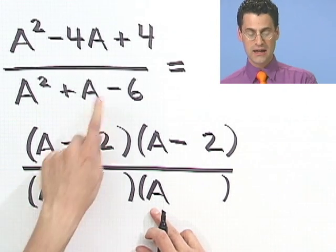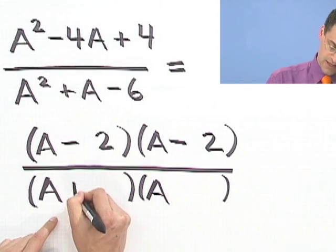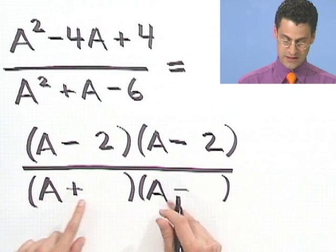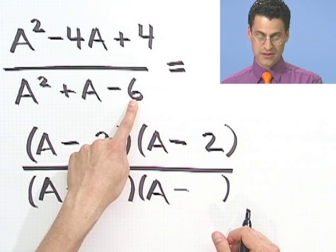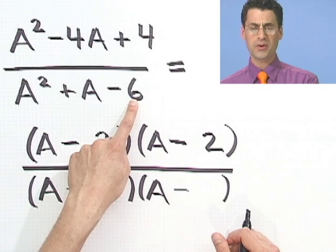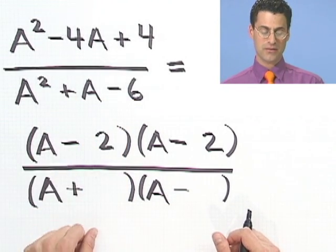OK, so here I'm going to have an A and A. The negative sign means they're going to be opposite signs. And since they're both the same A's here, I can put them any way I want. Don't worry about that. It's got to multiply to give 6 and combine somehow to give a 1.